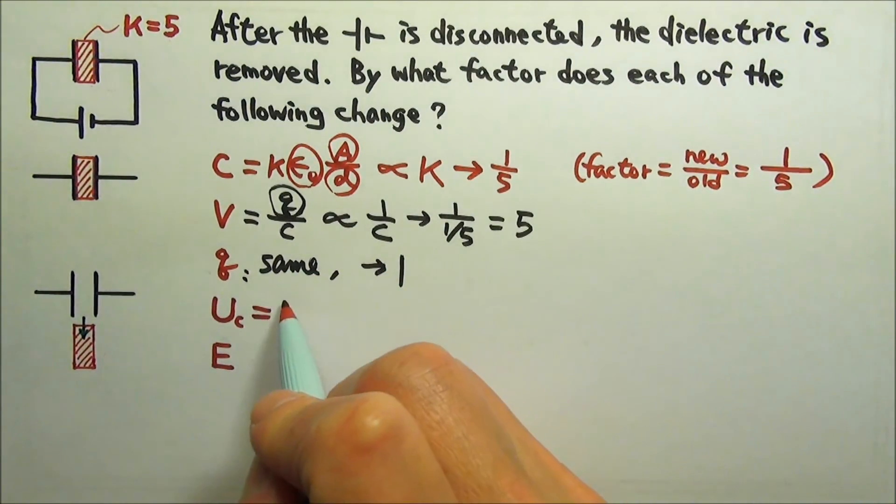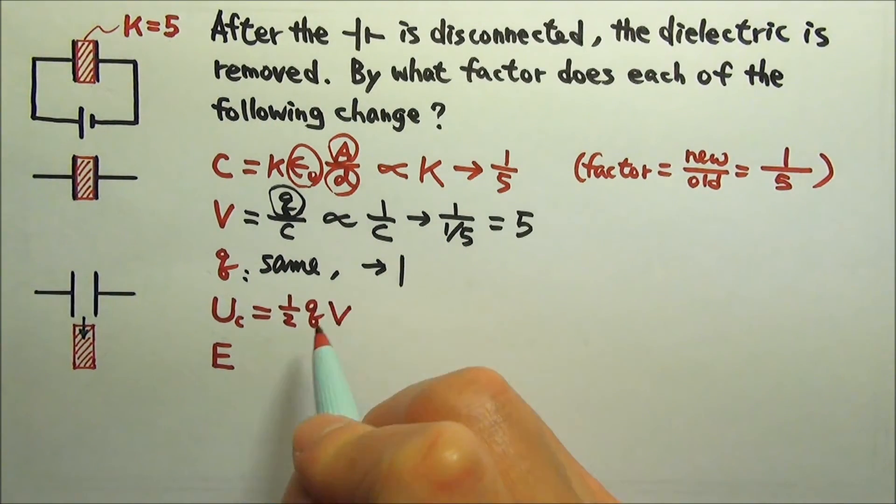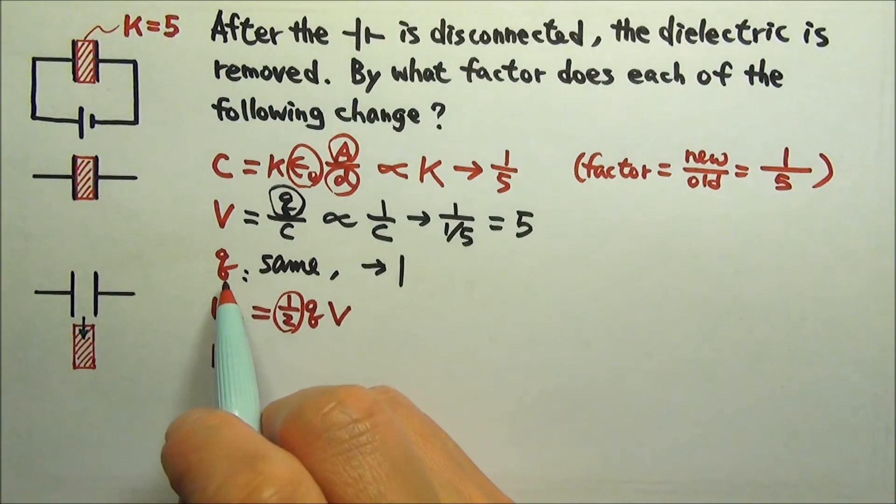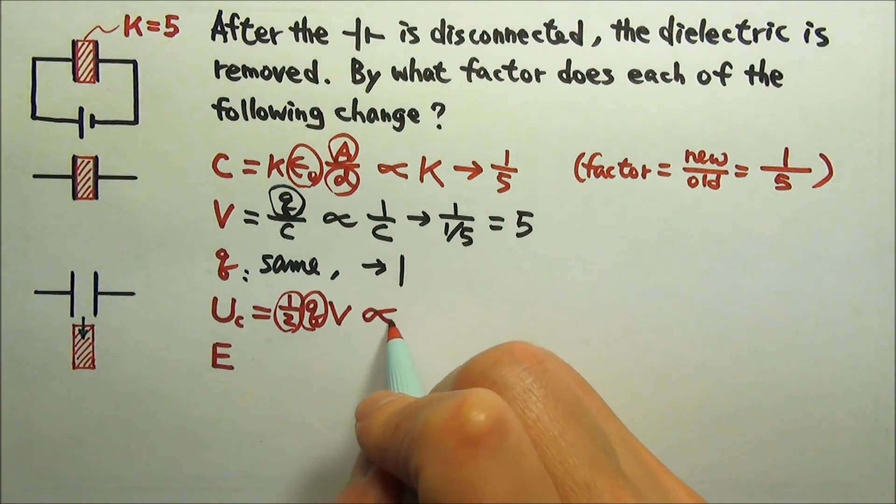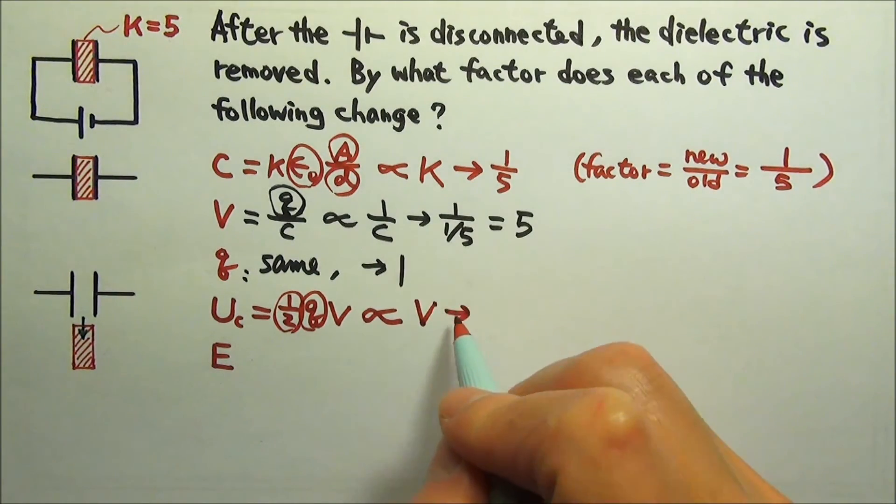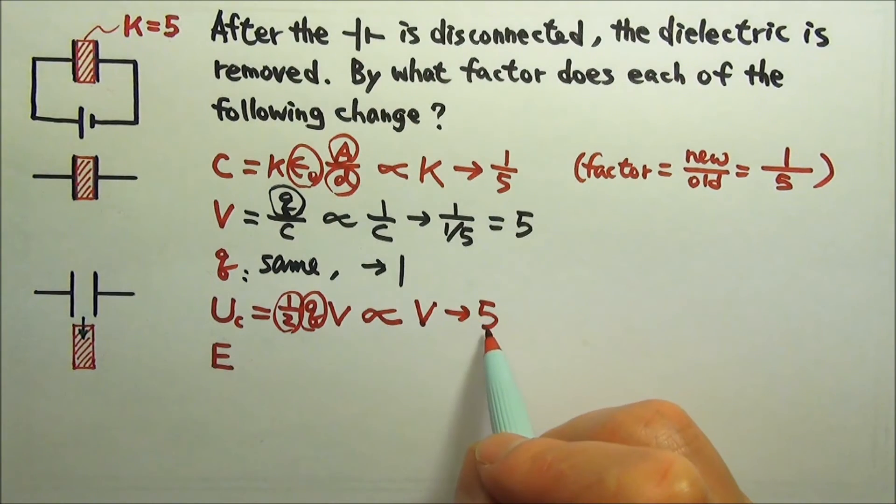The potential energy stored on the capacitor is 1/2 qv. 1/2 is a constant and the charge stays the same. So the potential energy stored is proportional to the voltage. And the voltage changes by a factor of 5, so the potential energy changes by the same factor of 5.